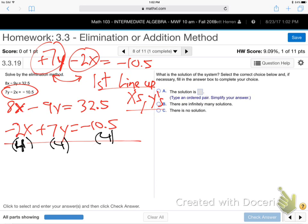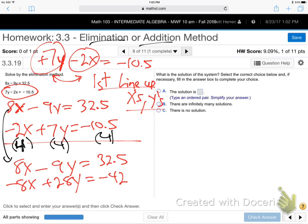So, elimination method, name of the game is make the two X's or the two Y's be opposites, right? Same number, one positive, one negative, so they'll eliminate when you add them. That's why it's called elimination, it's also called addition method. What do we have here? I'm gonna bring the top one down. So, we have got 8X minus 9Y is 32.5. The second one is minus 8X plus 28Y is minus 42. And then we add them up. So, if you add these guys up, these cancel, and you get, what is that, 19Y?